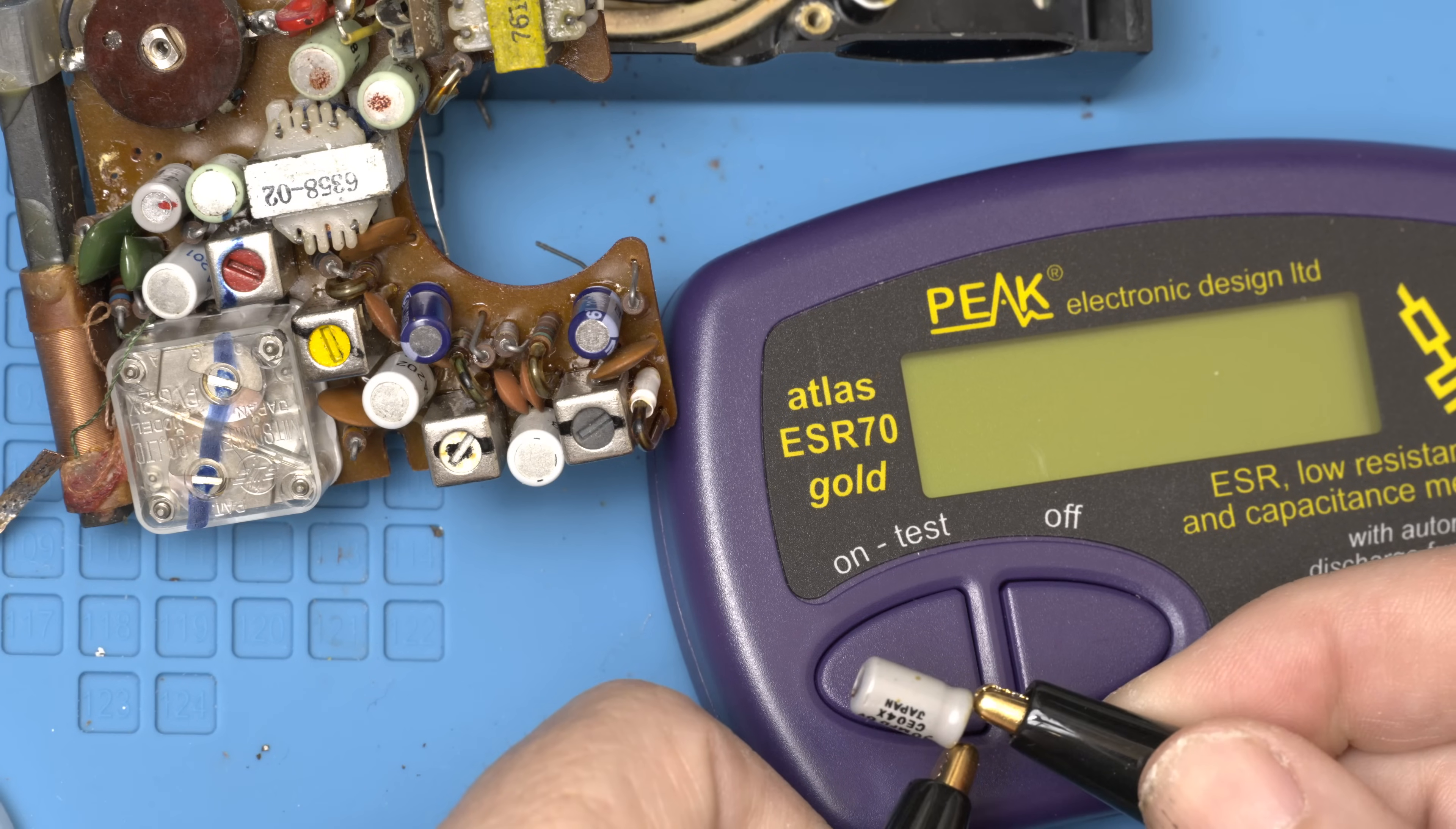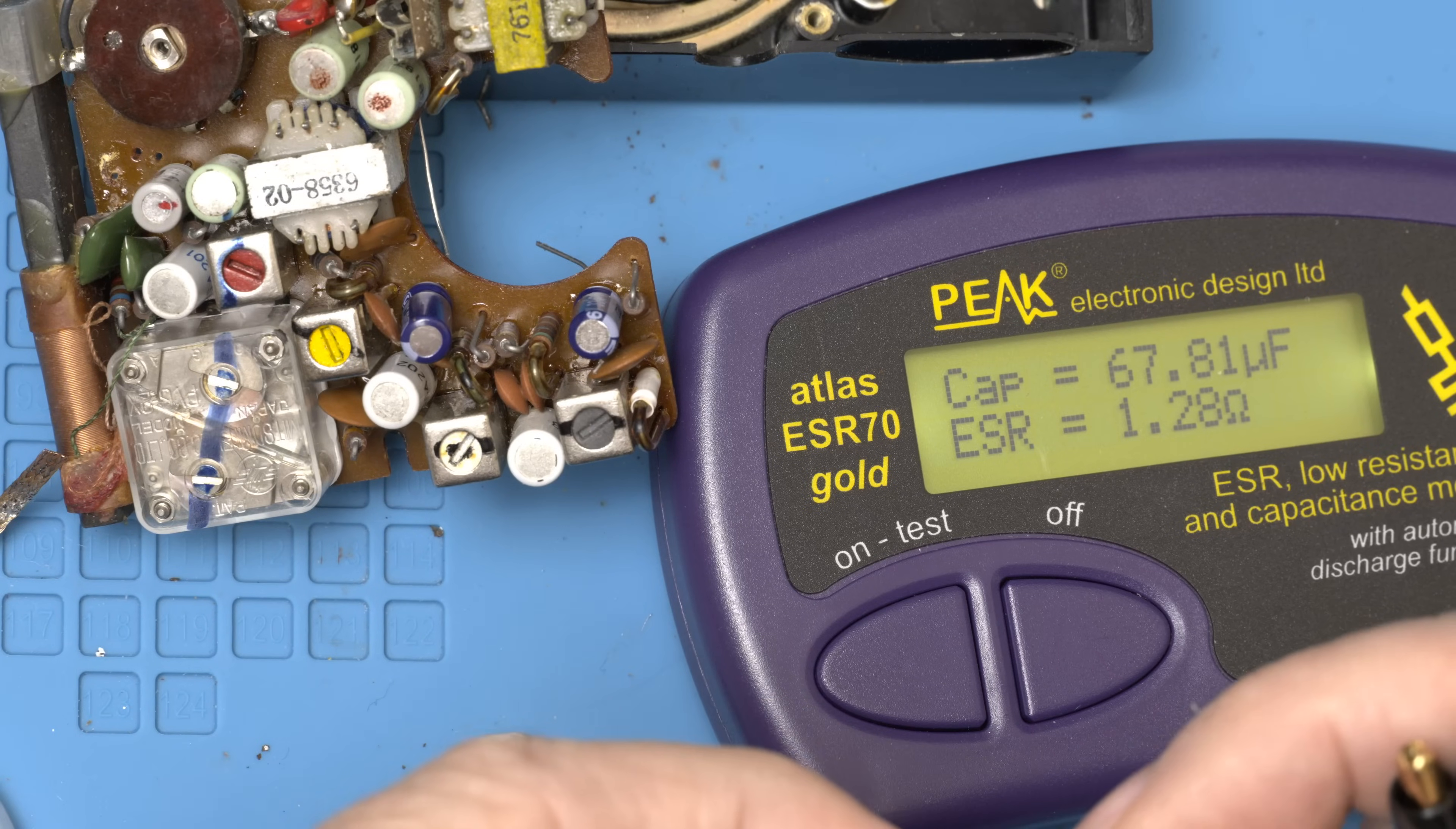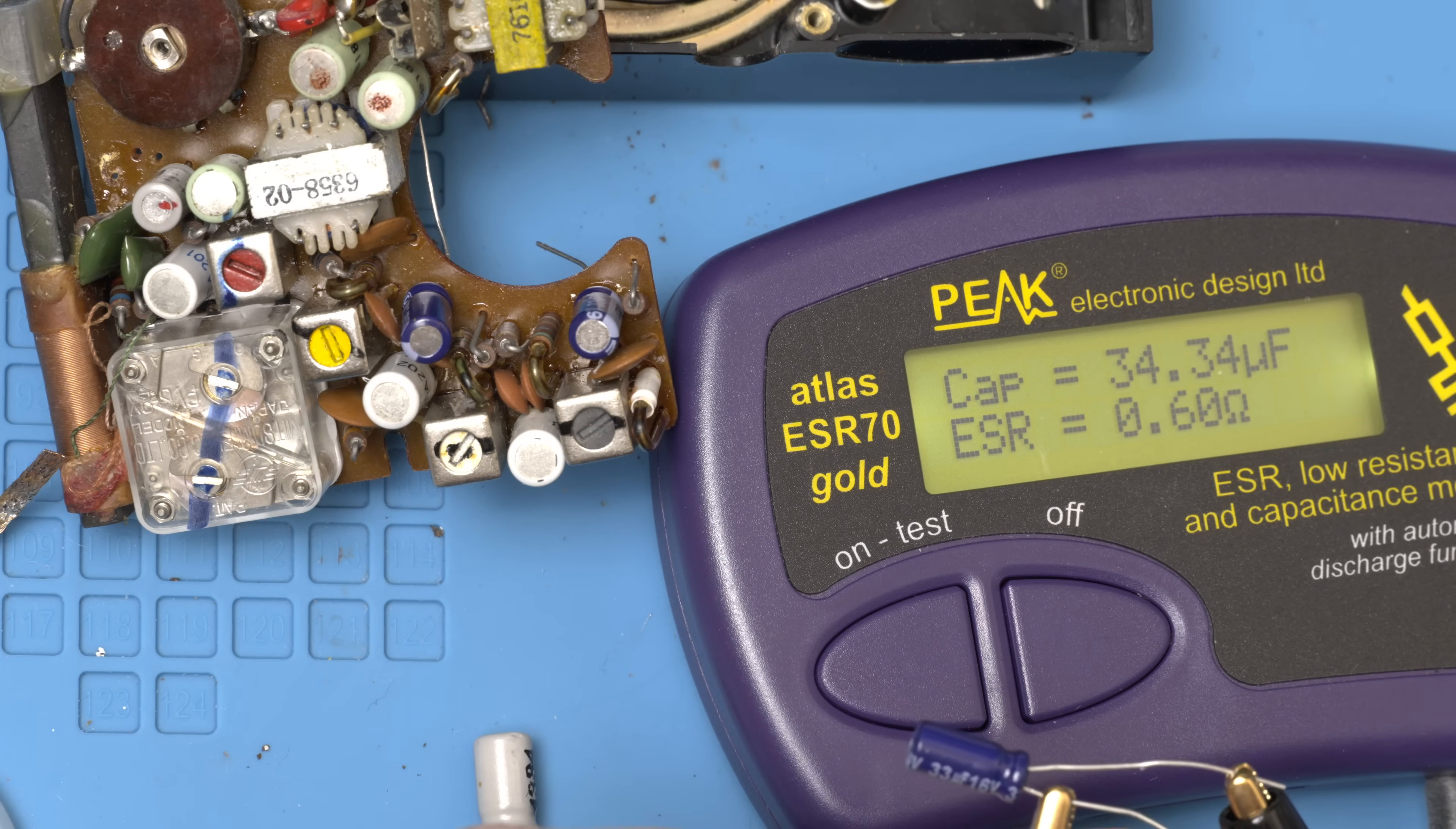So I have been having fun testing these things. Let's try the latest one. And the 30 is 67, almost 68, and a 1.28. Not good. And let's see the new one. 34 and 0.6. Much better.